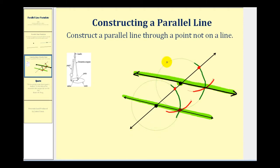If you're wondering why this construction actually worked, remember that the corresponding angles of two parallel lines cut by a transversal are congruent. By sketching this line here, we were able to copy this angle up here, therefore making the corresponding angles congruent and making the two lines parallel.